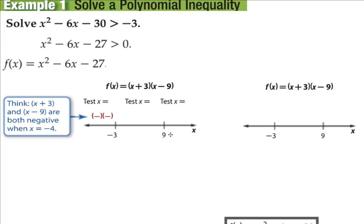Now we have three intervals: left of negative 3, between negative 3 and 9, and greater than 9. We're going to pick test values in each of those intervals — these are completely random, you can choose what you want. I chose negative 4 because it's left of negative 3, 0 is between, and 10 is to the right of 9. We take each test point and plug it into each factor to see whether we get a positive or a negative. Plugging in negative 4 to the first factor gives a negative, and to the second factor also gives a negative.